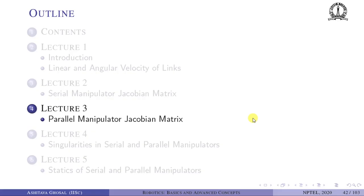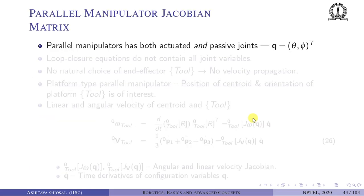In the parallel manipulator Jacobian matrix, we do not have a single path from the fixed frame to the chosen end effector — there are multiple paths and multiple loops. So we need to understand how to obtain the parallel manipulator Jacobian matrix. In a parallel manipulator there are both actuated and passive joints.